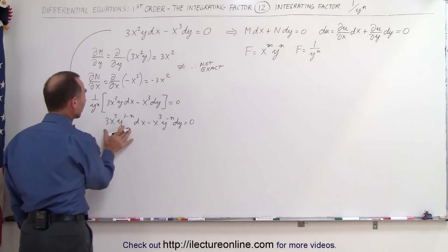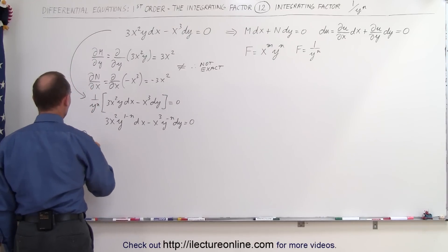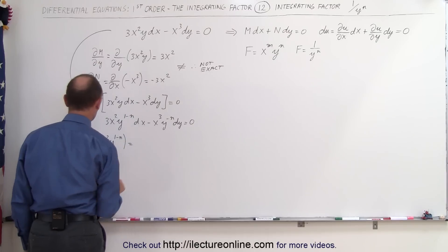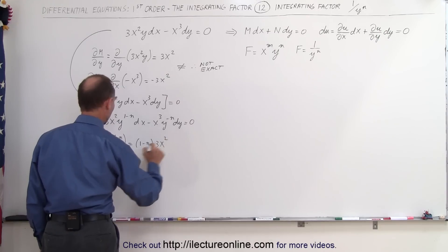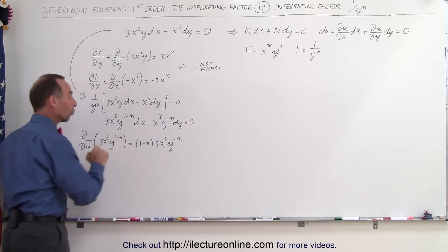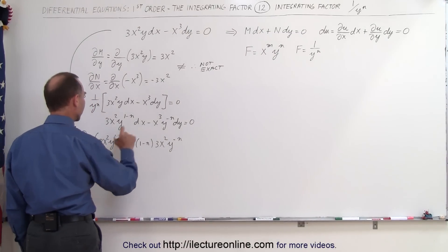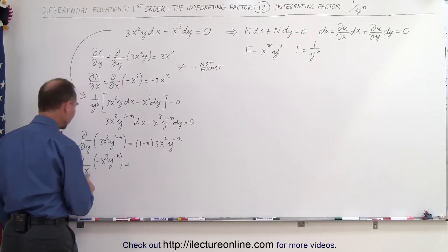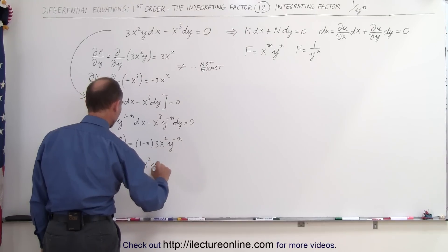Now we take the partial of the new M with respect to y and the partial of the new N with respect to x, and set them equal to each other to find the exponent n. The partial with respect to y of 3x² y to the (1 minus n) gives (1 minus n) times 3x² times y to the (minus n). And the partial with respect to x of minus x³ y to the minus n gives minus 3x² y to the minus n.